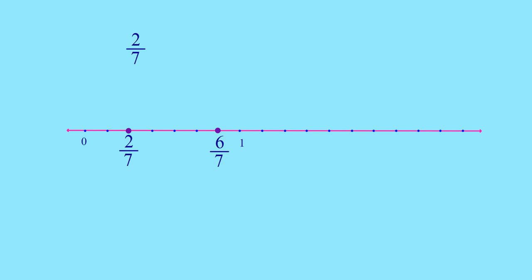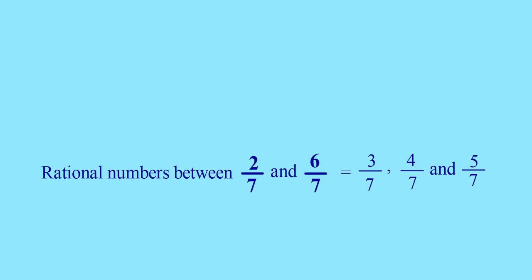What are the rational numbers between 2 by 7 and 6 by 7? Take 2 by 7 and 6 by 7 on a number line where one unit is divided into 7 parts: 1, 2, 3, 4, 5, 6, 7. So 2 by 7 and 6 by 7 are marked. The rational numbers in between are 3 by 7, 4 by 7, and 5 by 7. So between 2 by 7 and 6 by 7, you can write 3 by 7, 4 by 7, and 5 by 7 — three rational numbers.